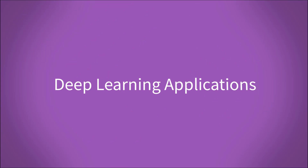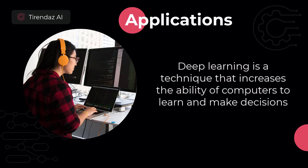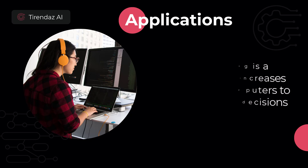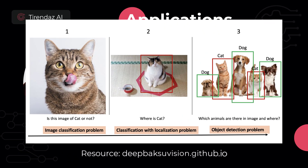Deep learning is a technique that increases the ability of computers to learn and make decisions, and it has many different applications. Thanks to deep learning techniques, a computer can recognize objects in a picture and classify these objects correctly. For example, you can use deep learning in projects such as image classification, object detection, face recognition, and image restoration.